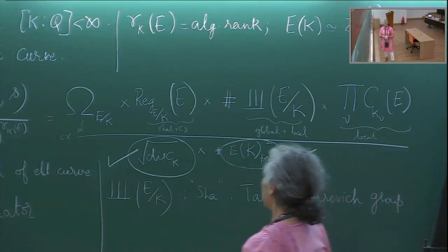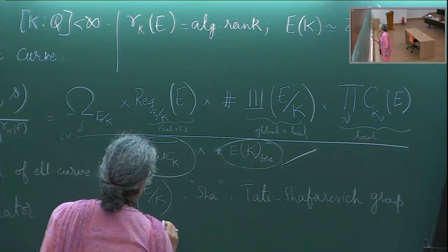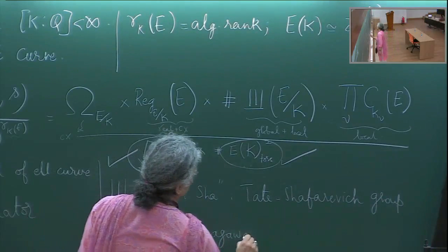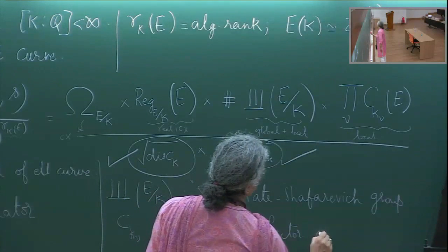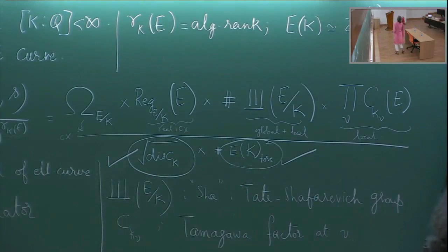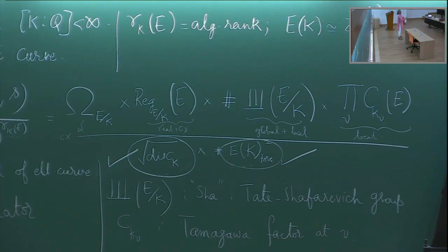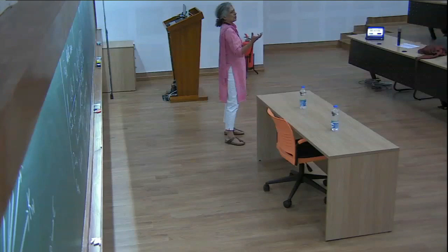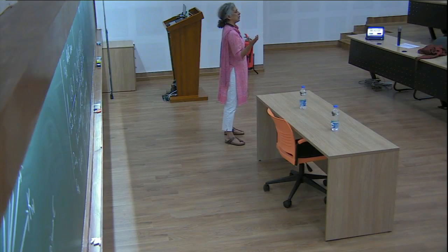This encodes the nature of the points of the elliptic curve over the complex numbers. You pick the differential form ω_E = dx / (2y + a₁x + a₃), where a₁, a₃ are the Weierstrass equation coefficients. Over the complex numbers, any elliptic curve as a topological space is a torus. So it is a complex manifold, and given this differential form you can integrate it along loops. E(C) has a Betti cohomology H¹(E, Z), and the right way to think of this is as paths on the complex manifold.